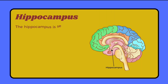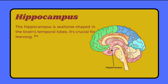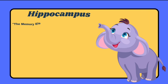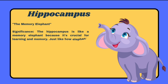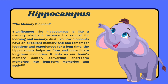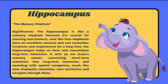The hippocampus is seahorse-shaped and located in the brain's temporal lobes. It is crucial for learning, memory, and converting short-term memory to long-term memories. The hippocampus is like a memory elephant, because just like elephants have an excellent memory and can remember locations and experiences for a long time, the hippocampus helps us form and consolidate long-term memories.